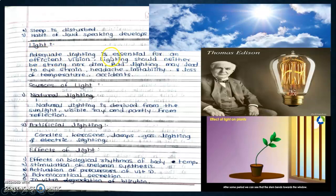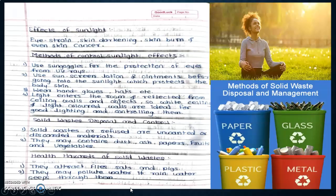Light: adequate lighting is essential for efficient vision. Lighting should be neither strong nor dim. Bad lighting may lead to eye strain. Dim light results in headache, irritability, and loss of temperature, causing accidents. Sources of light include natural light and artificial light like particular bulbs, candles, kerosene lamps, gas lighting, and electric lighting. Effects of light include effects on biological rhythms of body temperature, stimulation of melanin synthesis causing pigmentation and skin darkening, activation of precursors of vitamin D, adrenocortical secretion, and in vitro degradation of bilirubin.